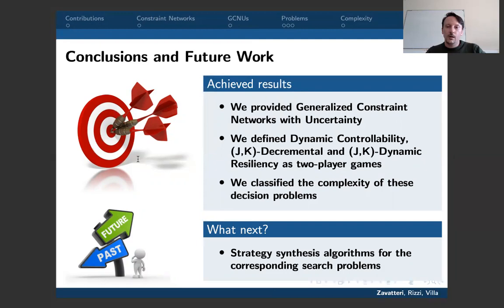In conclusion, we provided a Generalized Constraint Network with Uncertainty by injecting two sources of uncertainty to model uncontrollable parts: uncontrollable value assignment and uncontrollable picking. We defined dynamic controllability, JK decremental resiliency, and JK dynamic resiliency as two-player games between controller and nature, and classified the complexity of these decision problems as all PSPACE-complete. As a next step, we plan to develop strategy synthesis algorithms for the corresponding search problems. Thank you very much for listening.